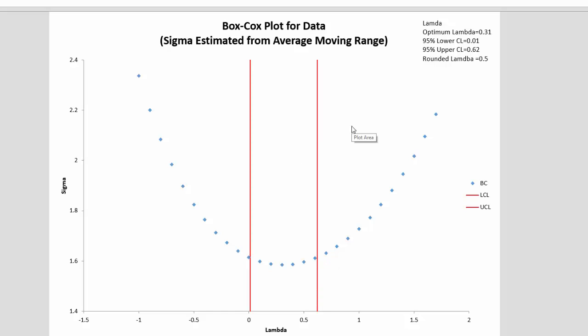And up in the upper right-hand corner, we've summarized the results. The optimum lambda is 0.31, and we show our 95% confidence limits.